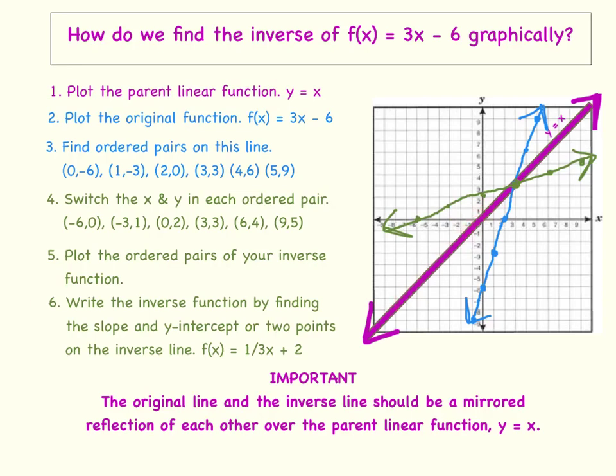Now we are ready to write the inverse function. And we will do this by finding the slope and y intercept or two points on the inverse line. So let's look at it. I see that my y intercept is y equals 2. And I could go up 1 and to the right 3 and I will hit the next point. If I start here and go up 1 to the right 3, I have found my slope, 1 third. So here is the equation written as a function: f of x equals 1 third x plus 2.